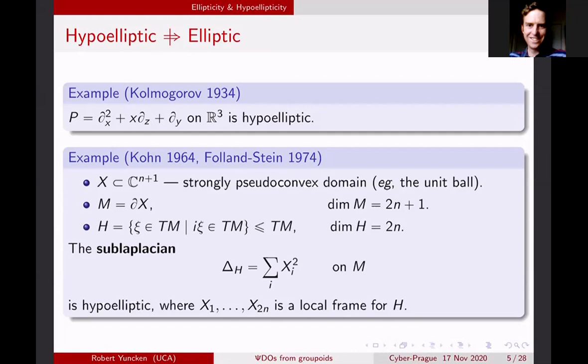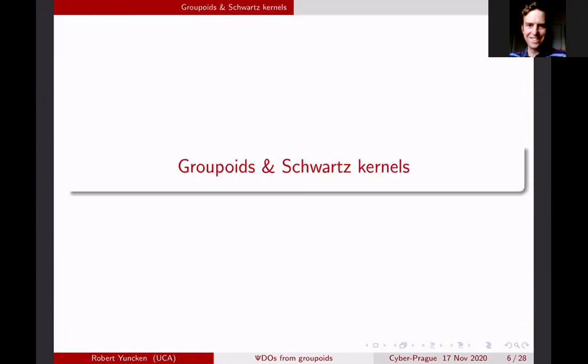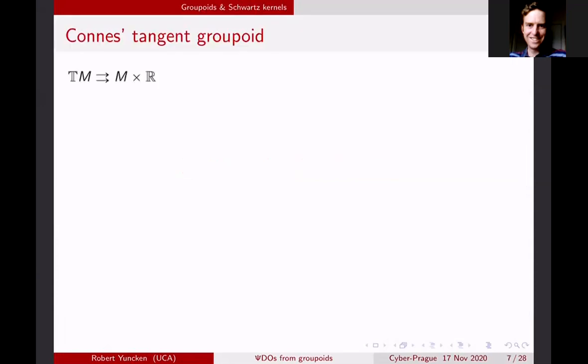Those are the examples motivating the work I'll talk about. But I want to start really in the elliptic world to explain the general philosophy. To do that, we need to talk about groupoids and Schwartz kernels. I'm sure many of you know about Connes' tangent groupoid, but this is really the star of the show, so it's very important that I introduce it correctly.